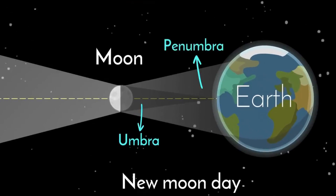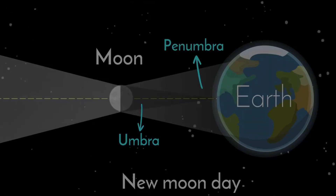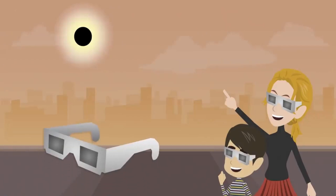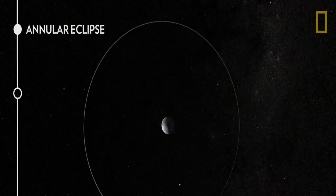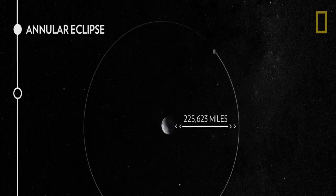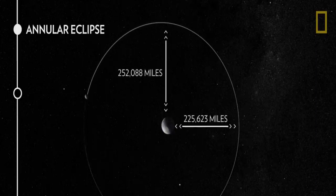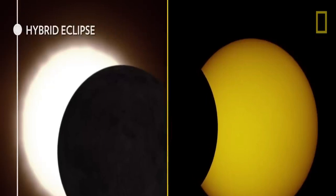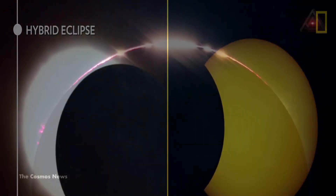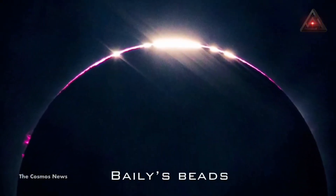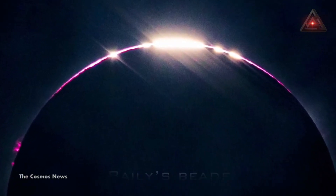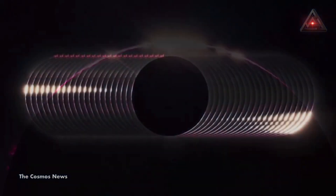This type of eclipse shifts from total solar eclipse to annular, ring-shaped, as the moon's shadow moves across the surface of the earth. The last hybrid solar eclipse happened in 2013, and the next will occur in 2031. After that, future sky watchers will have to wait until March 23, 2164.